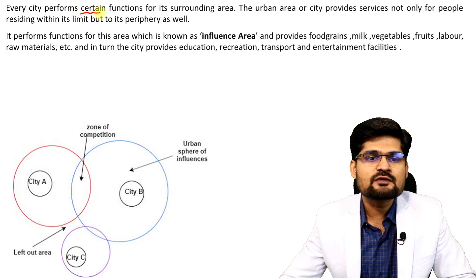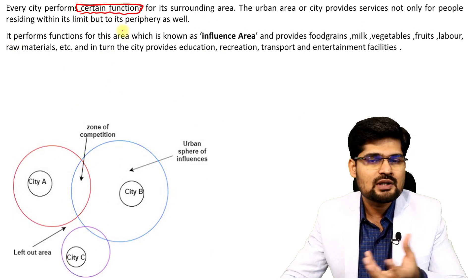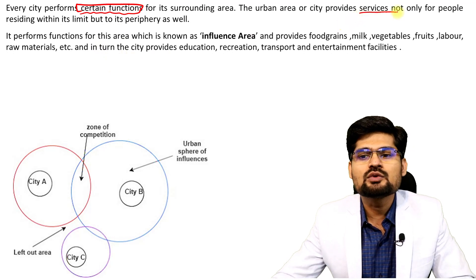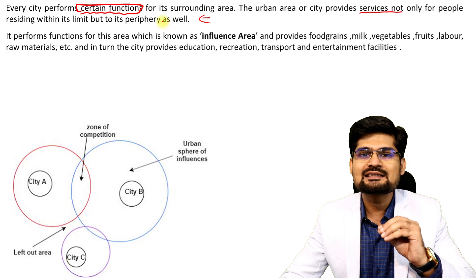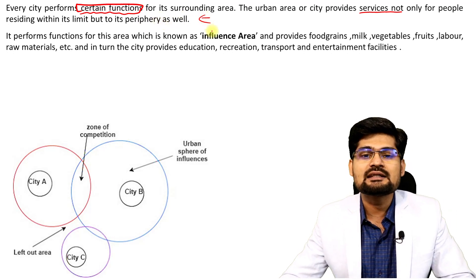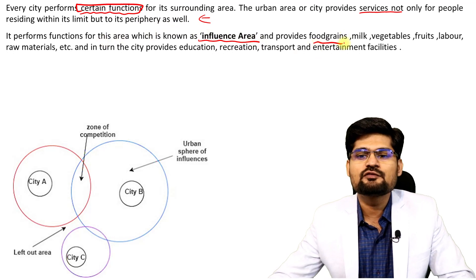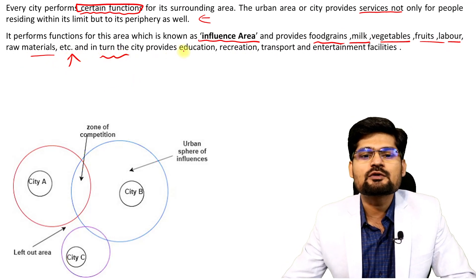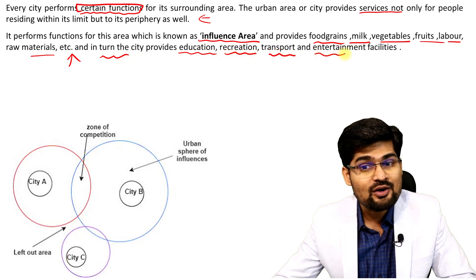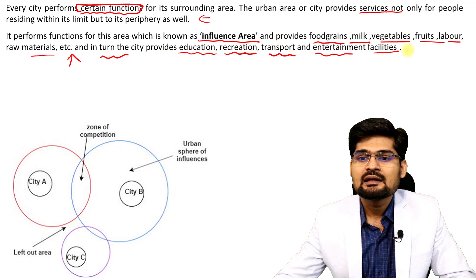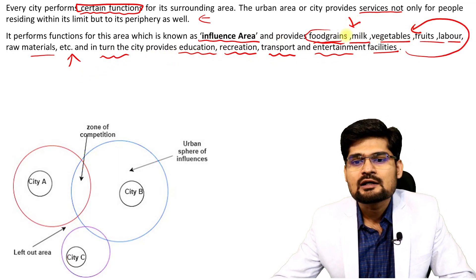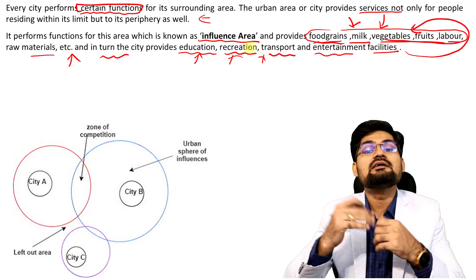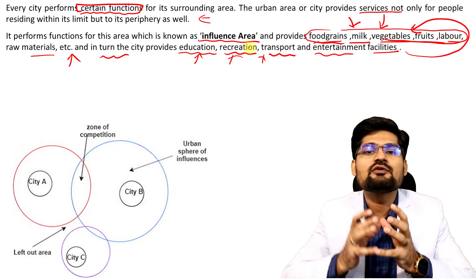Every city performs certain functions — administrative, educational, health, and other service functions. It provides services to people within the city and also to people from outside the city. For example, the city receives inflow of food grains, milk, vegetables, fruits, labor, and raw materials. In turn, the city provides education, recreation, transport facilities, technology, and entertainment. There is an inflow of raw materials to the city, while the city provides education and other functions in return.